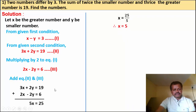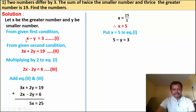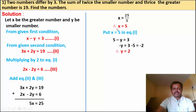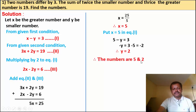Now put x equal to 5 in equation 1: 5 minus y is equal to 3. So minus y equals 3 minus 5, which is minus 2, therefore y is equal to 2. So we get x is equal to 5 and y is equal to 2. Therefore the numbers are 5 and 2.